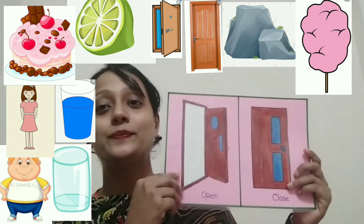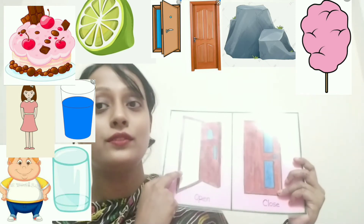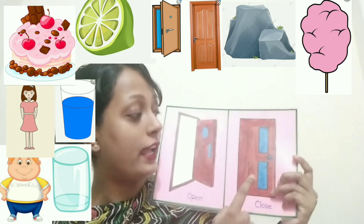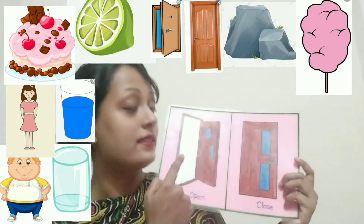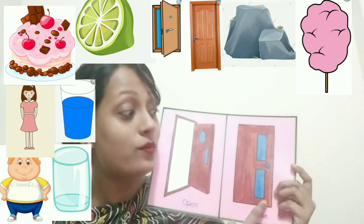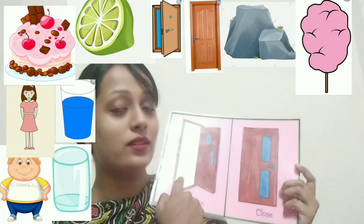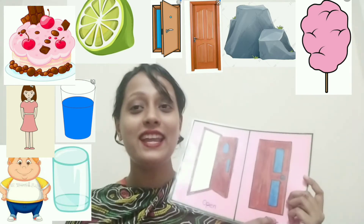Now class, look. There are two doors. The first door is open and the second door is closed. So this is open and this is closed. The opposite word of close is open, and the opposite word of open is closed. Very good, good job everyone.